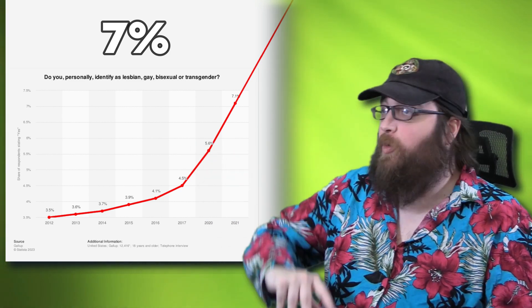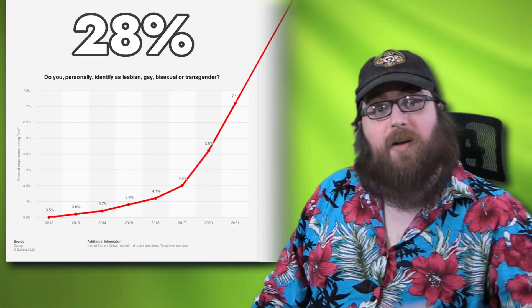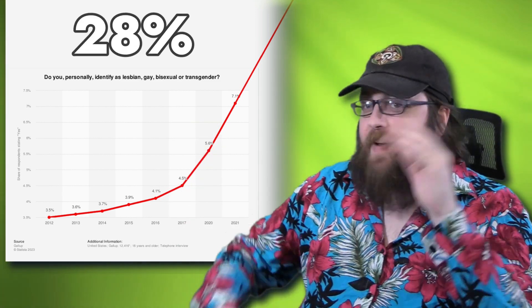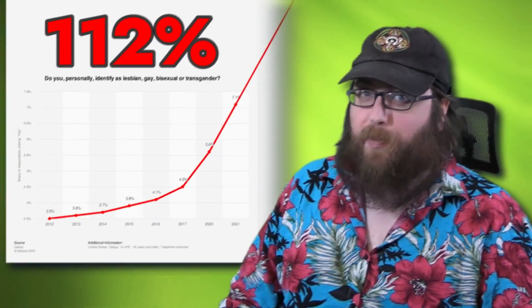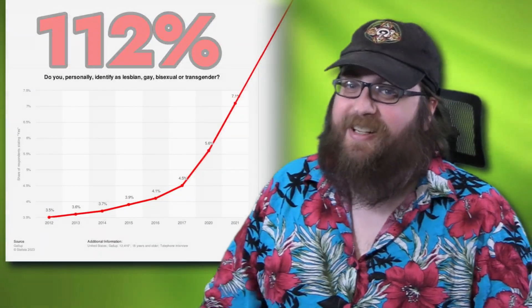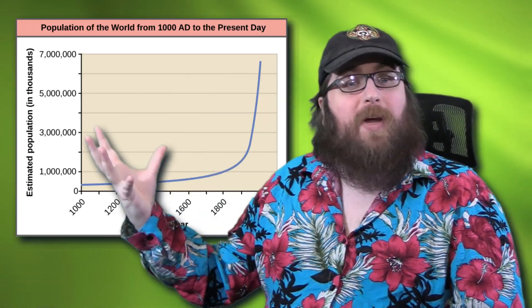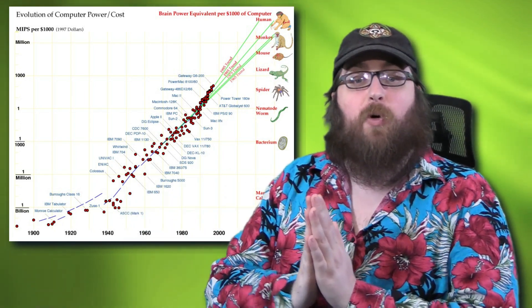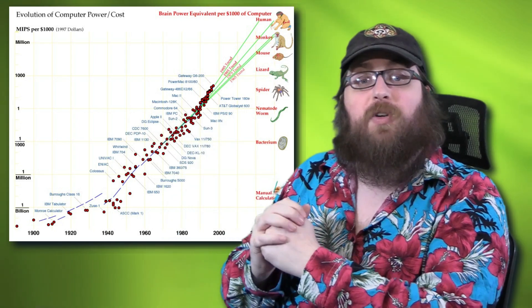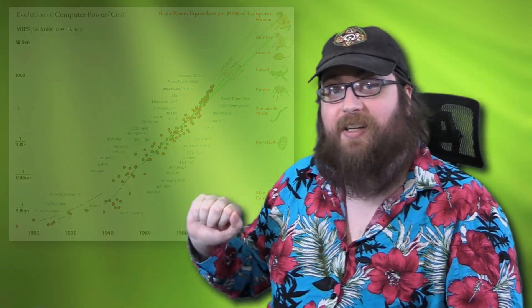The other incorrect conclusion that some people draw from this data is that they assume the numbers will continue rising at this rate forever. They'll see that the percentage doubled in 10 years and assume that, unless they do something, it'll double again by 2030 and again by 2040. And if it keeps doubling, then by 2060, 112% of the population will be trans. I laugh, but that's actually a very common mistake made about a wide variety of charts and statistics — whether it's human population or the processing power of computers, history is full of people who saw a pattern forming and assumed it was a trend that would continue exponentially, even if that was literally impossible.